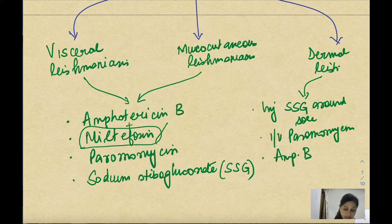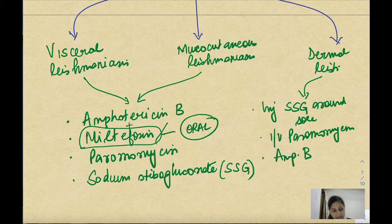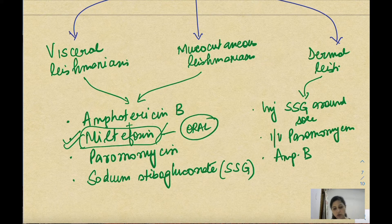Out of all these drugs, miltefosine is the only drug available in oral form — all the rest are parenteral. That's why it is important to remember: it is the only oral drug in leishmaniasis. In India currently, miltefosine is the drug of choice for visceral leishmaniasis, and it can be used along with amphotericin B.